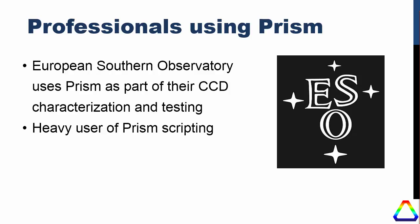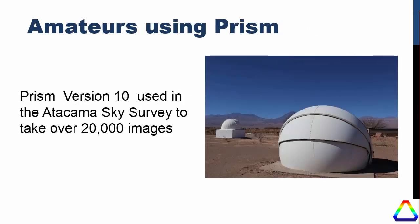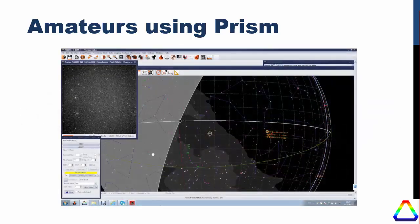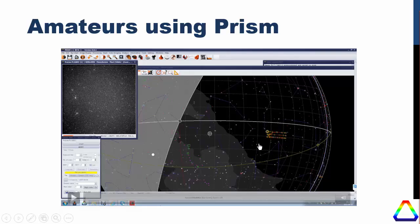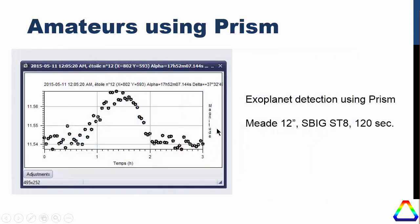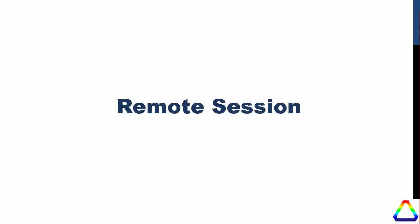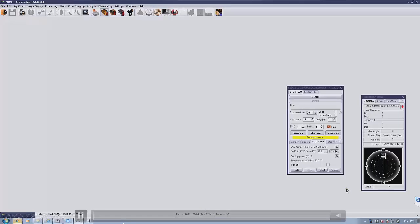Professionals are using PRISM — the European Southern Observatory uses it for CCD characterization testing and scripting functions, which is very handy for creating scripts for specific applications. Amateurs are also using it: it's been used for the Atacama Sky Survey over the past year to take over 20,000 images, with the sky chart showing the different fields being captured as it searches for new asteroids and comets and recovers existing ones. Another application is exoplanet detection — you can see a very clear exoplanet transit event in data captured by another amateur using PRISM.